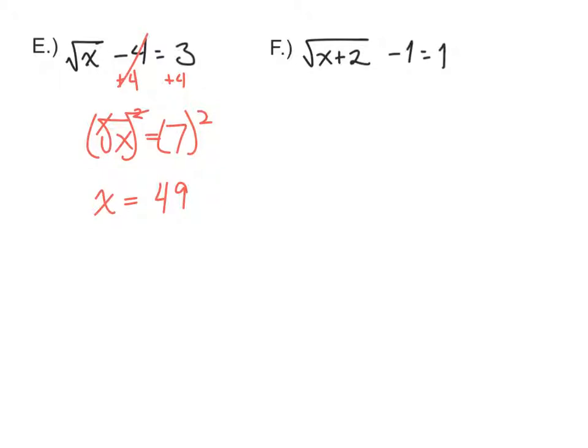For the next problem, again, get the square root alone. So add 1 to both sides. Once you have that square root alone, square. x plus 2 is equal to 4. Now we can solve that by subtracting 2, and x is equal to 2.